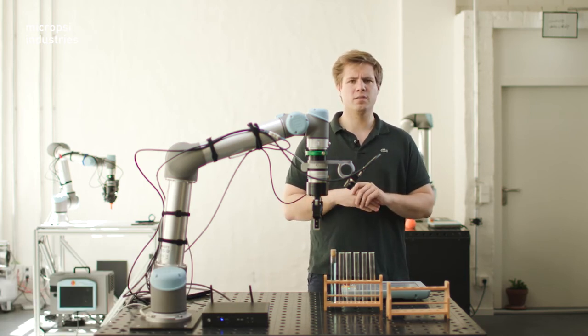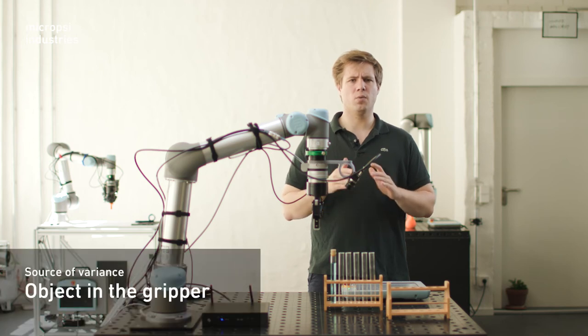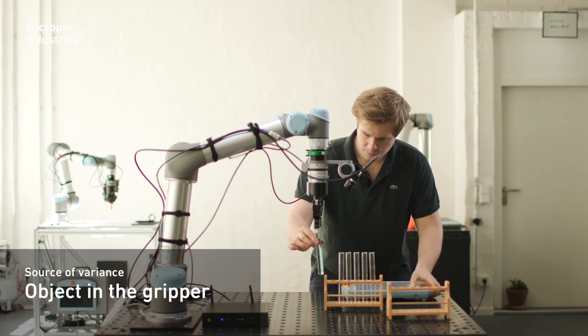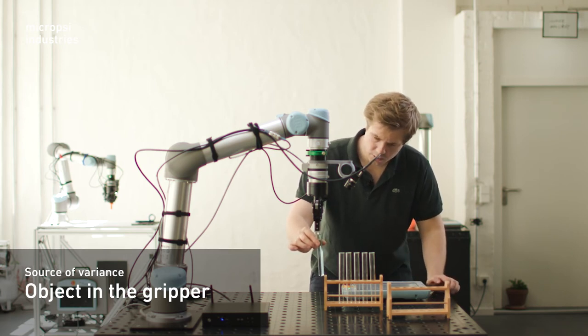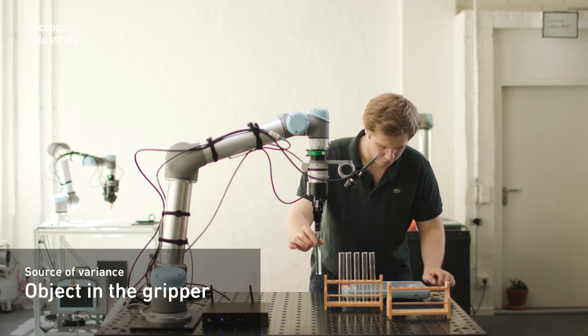Another source of variance, the object in the gripper. When held by the gripper, can it shift? Let me show you what I mean. Let me close the gripper. So, can it move inside of the gripper?